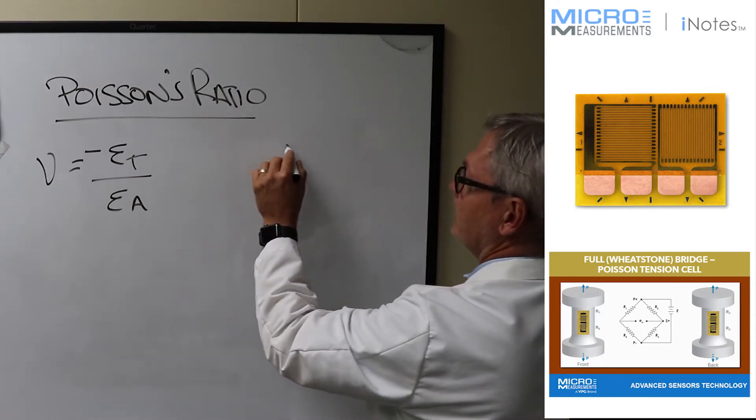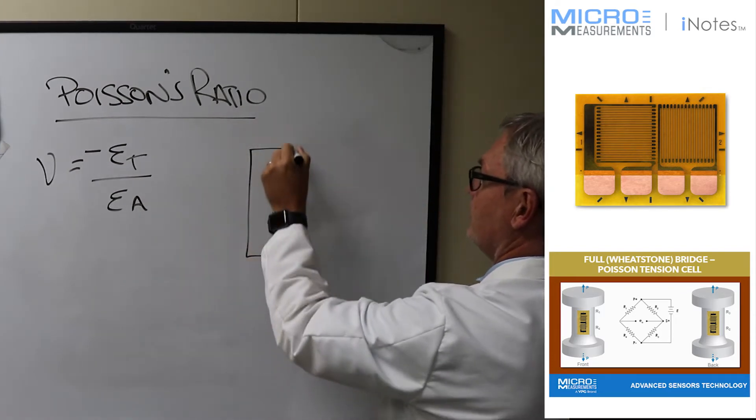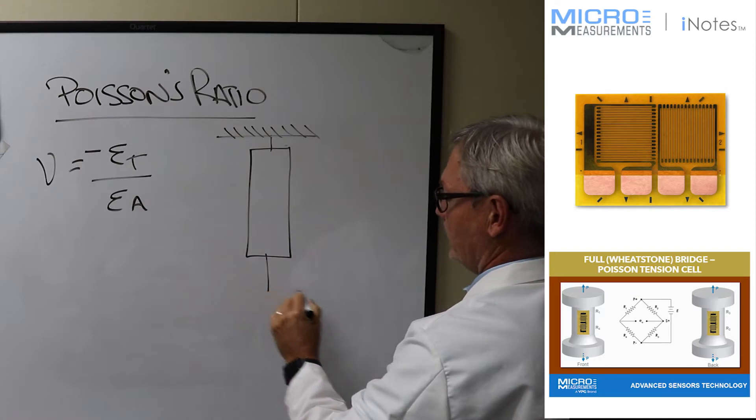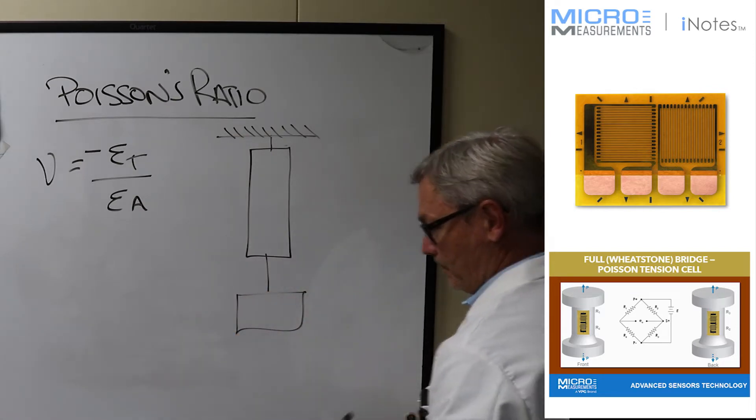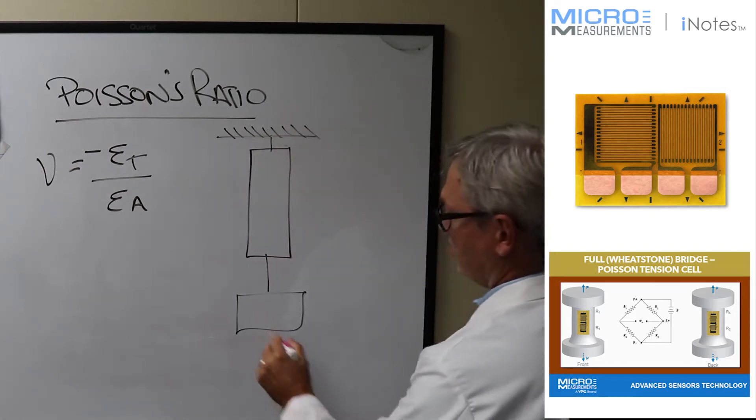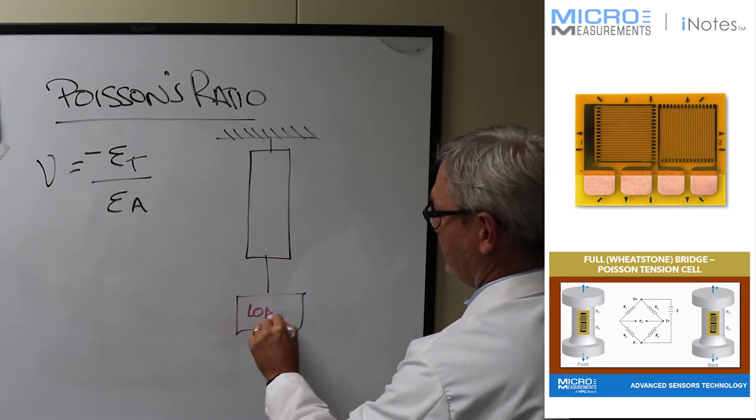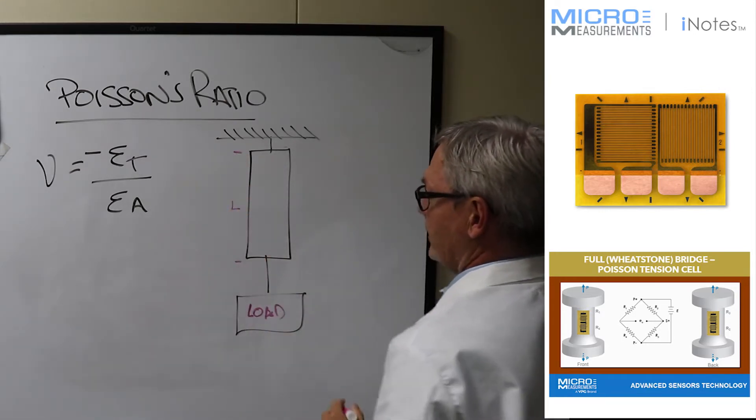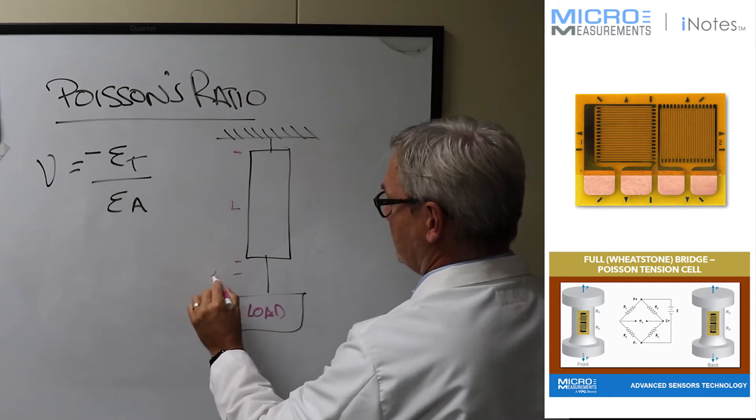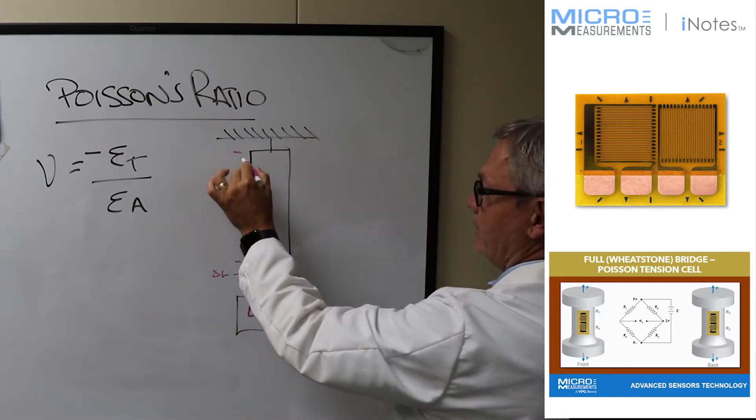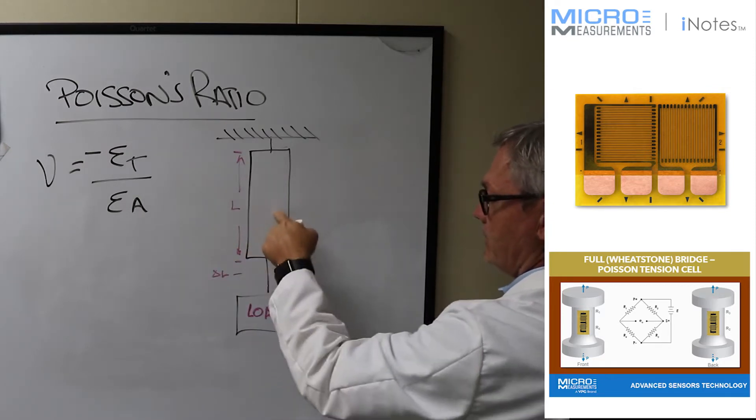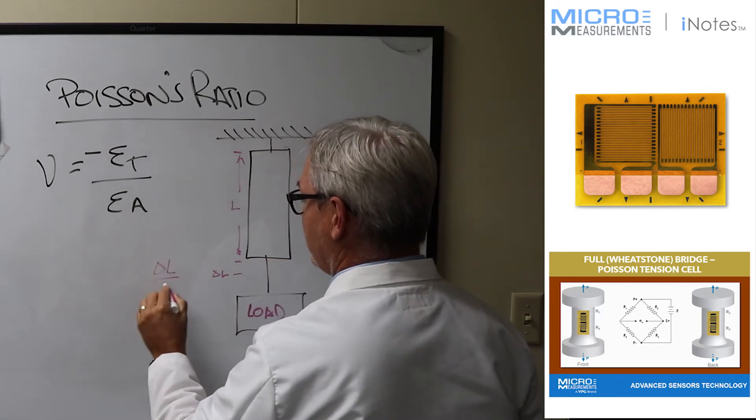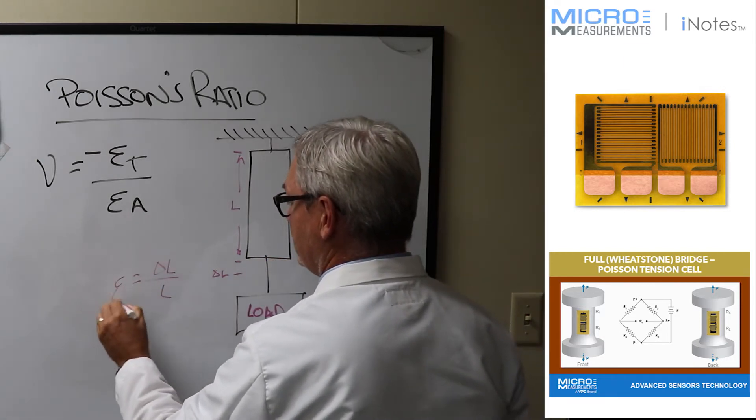So for example, let's take a tension member and let's fix it at one end and we're going to load it at the other. So as we start to apply this load, what we find is that this member that starts out at some distance L actually gets a little bit longer. So there's a change in length over the original length of this tension member as you start to load it. And we know that that change in length divided by the original length is equal to our strain.